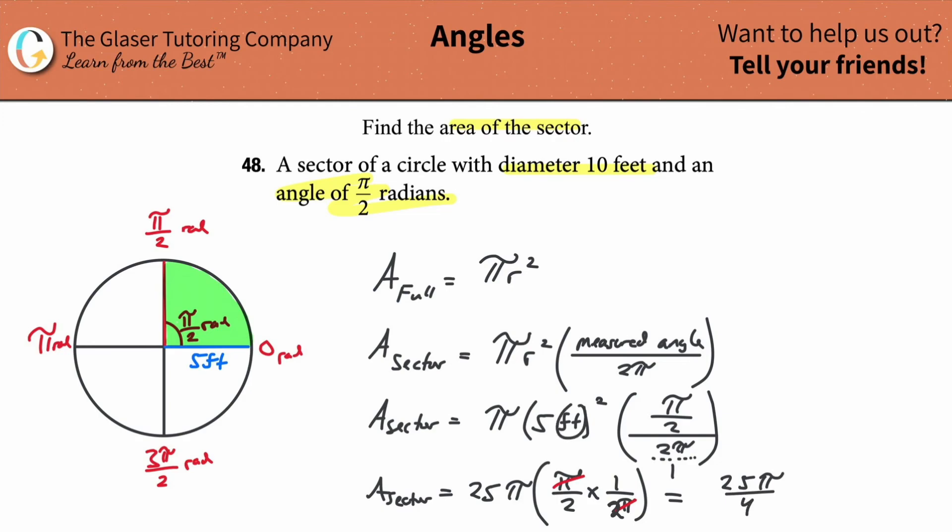And the units here are going to be feet squared. Now if you wanted to plug this into the calculator and get a decimal answer, just take 25, multiply it by π, and then divide it by 4. And this works out to be about 19.6 feet squared. And that's it, guys. Hopefully that helps. I look forward to helping you with more problems and I'll see you in the next one. Take care.